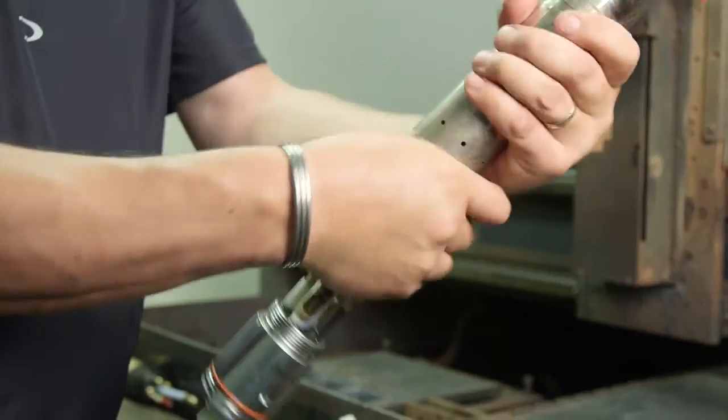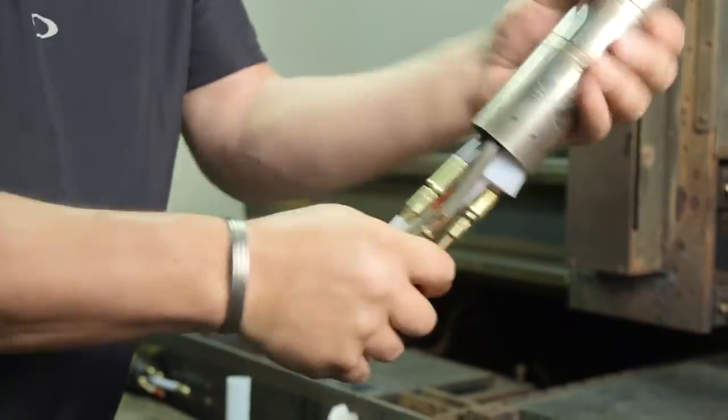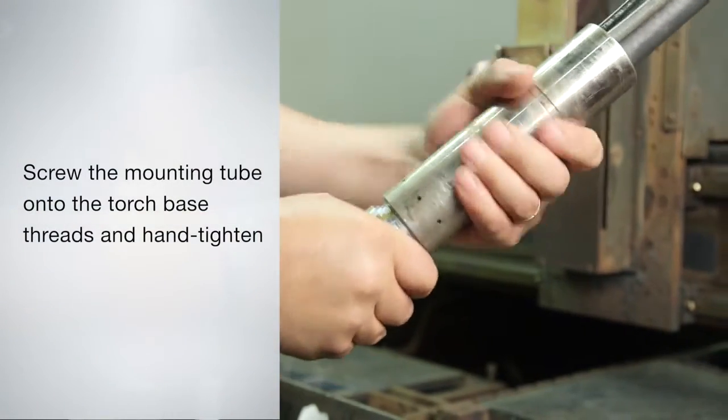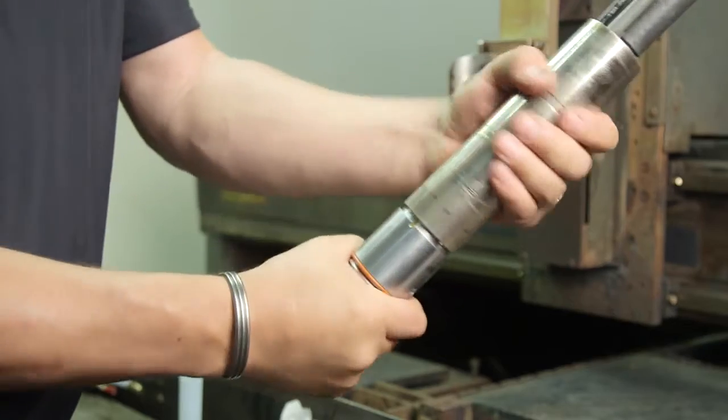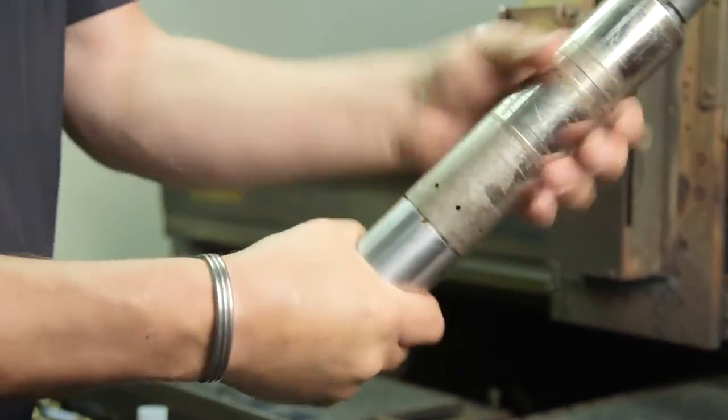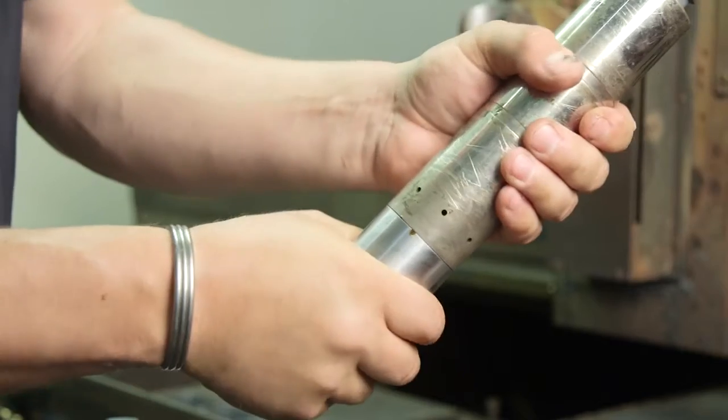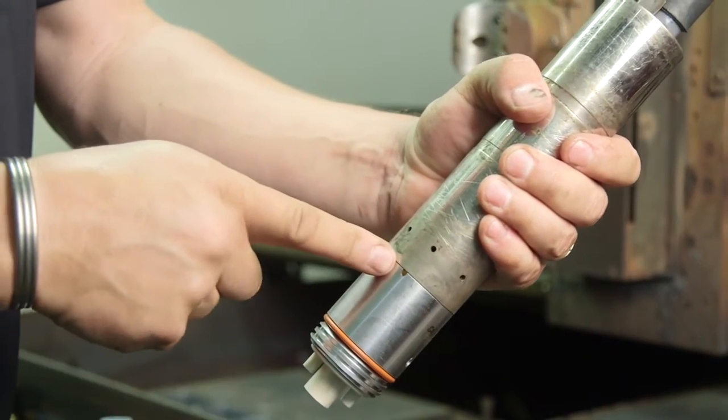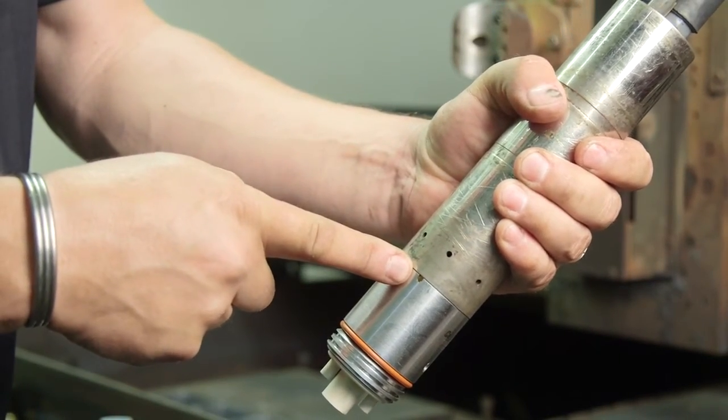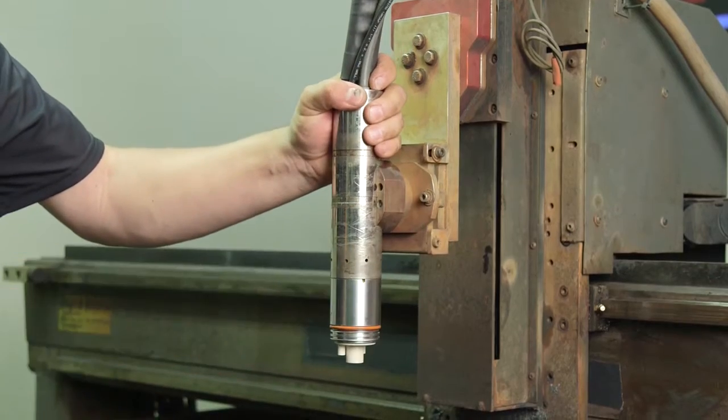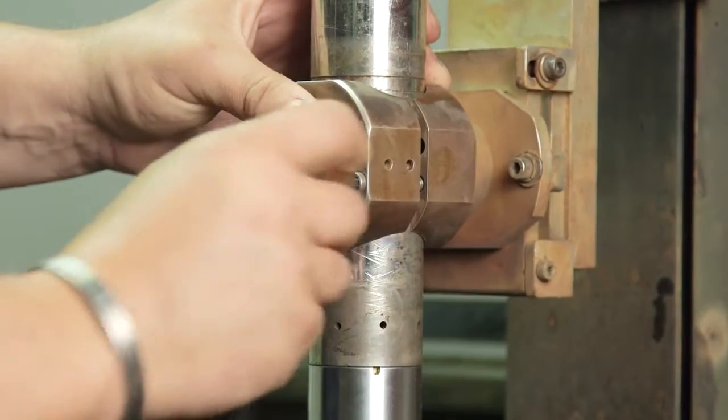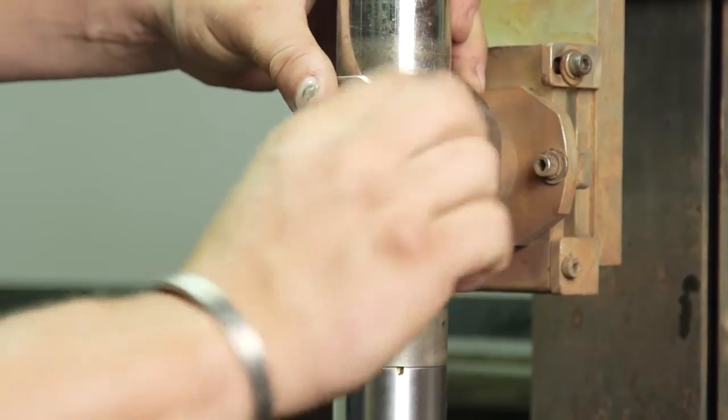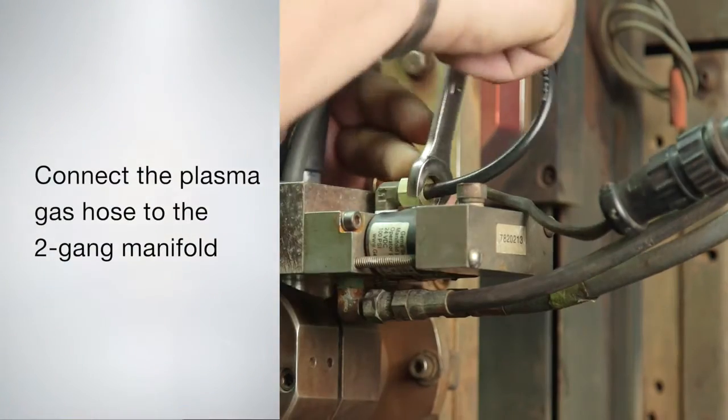Slide the mounting tube down over the leads and screw it onto the torch base threads. Hand tighten by turning the mounting tube. Turn the mounting tube, not the torch, to prevent twisting of the hoses and wires attached to the torch. Notice that there is a weep slot for coolant buildup or condensation. Place the torch and mounting tube back into the torch clamp. Connect the plasma gas hose to the two-gang manifold.